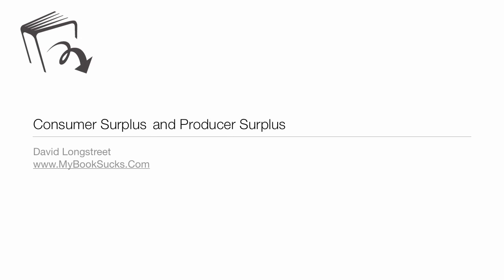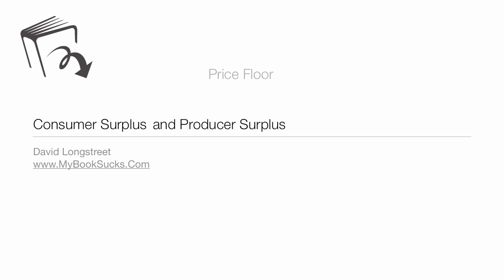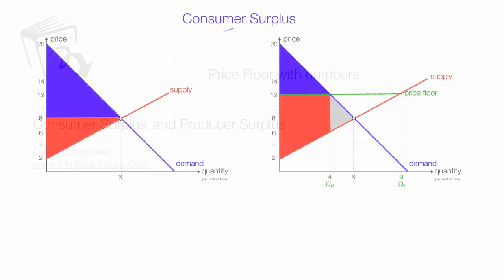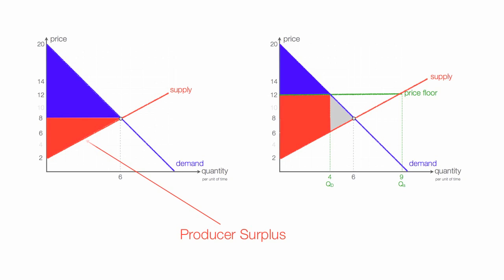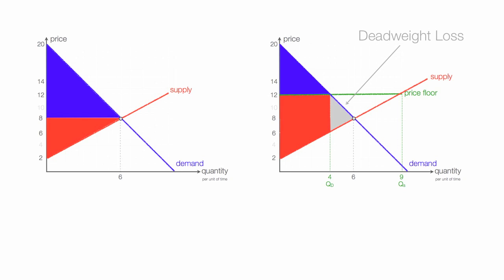In this video, I'm going to talk about consumer surplus and producer surplus with price floors. I'm going to compare consumer surplus before and after a price floor, then examine producer surplus before and after a price floor. And we'll also calculate the deadweight loss to society of a price floor.